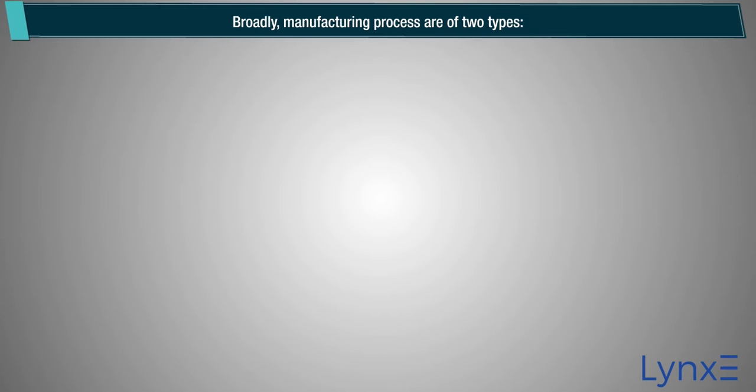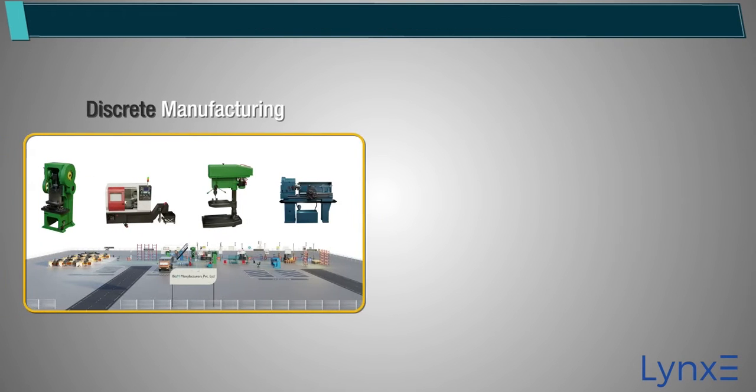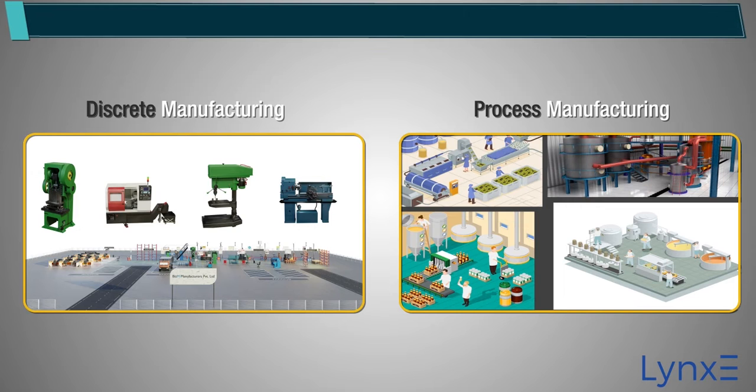Broadly, manufacturing processes are of two types: discrete manufacturing and process manufacturing.